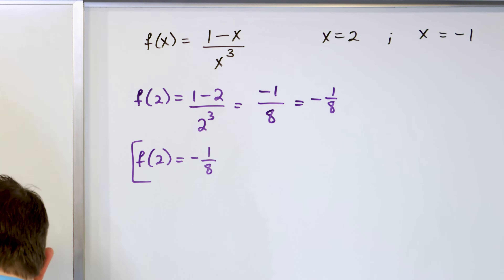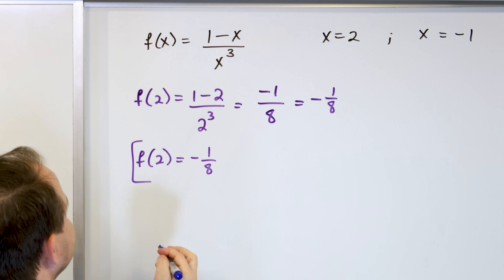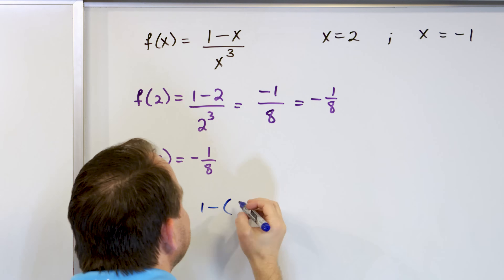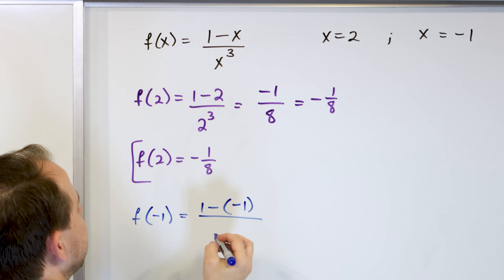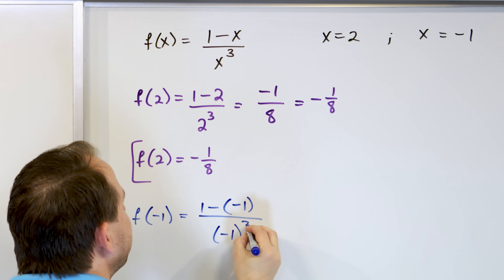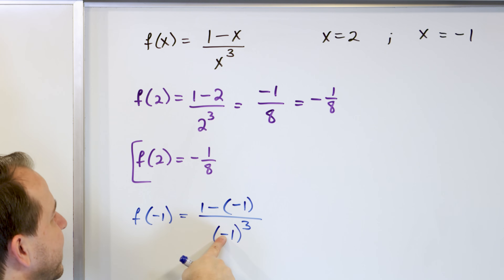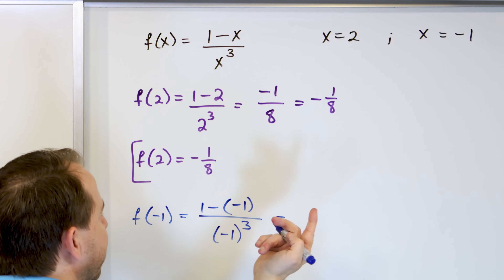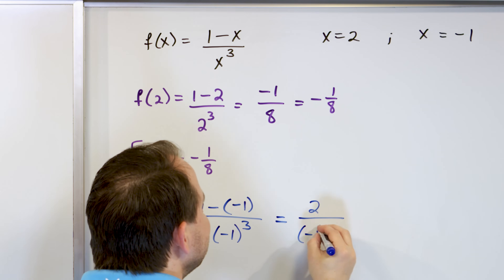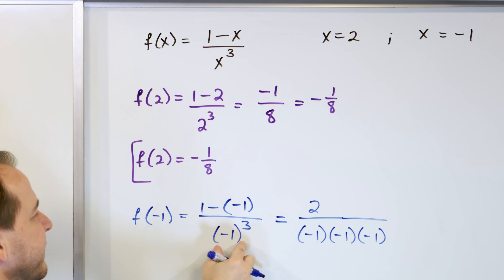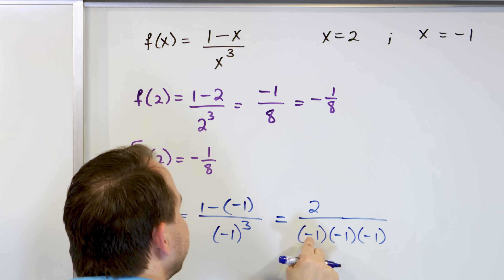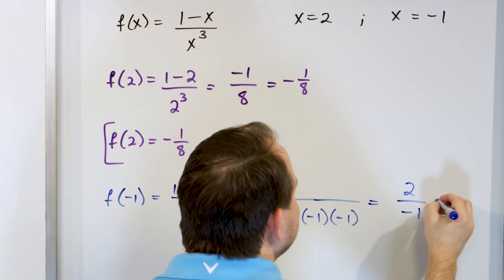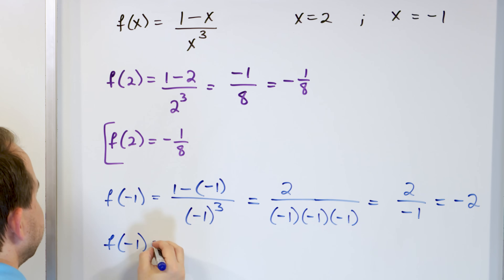Now evaluate at x equals negative 1: f of negative 1 is 1 minus negative 1 on top — wrap it in parentheses — divided by negative 1 cubed on the bottom, also in parentheses to carry the sign through. On top, 1 minus negative 1 is 2. On the bottom, negative 1 times negative 1 times negative 1 equals negative 1. So the answer is 2 over negative 1, which is negative 2. The function evaluated at negative 1 is negative 2.